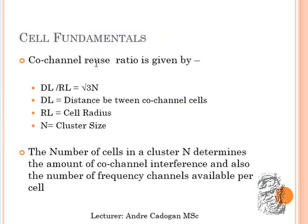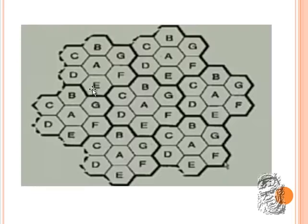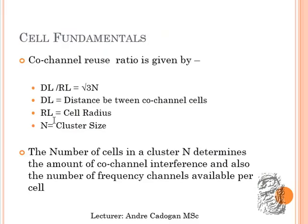Looking at the fundamentals of frequency reuse, the formula to determine cellular fundamentals in terms of the co-channel reuse ratio Q is the mean distance between co-channels D divided by the cellular radius R, which equals the square root of 3N, where N is the cluster size. This cluster size can be determined by the amount of co-channel interference as well as the number of frequency channels available per cell. In urban areas there are many co-channel interferences due to the large number of cellular subscribers.